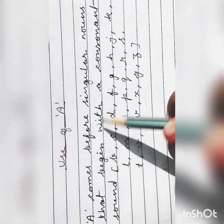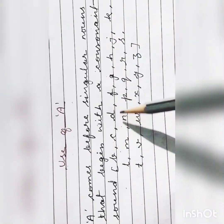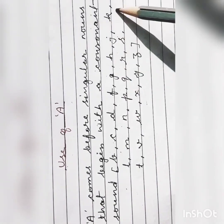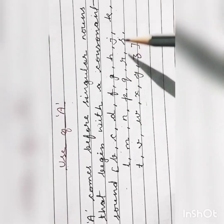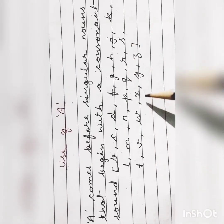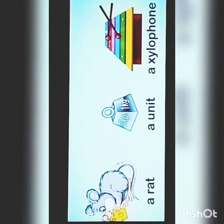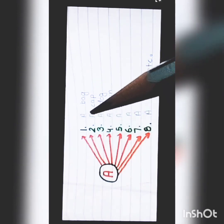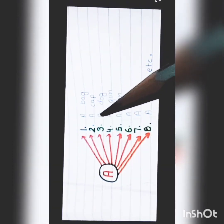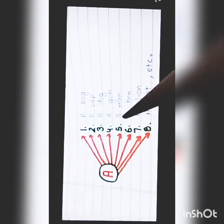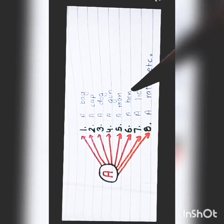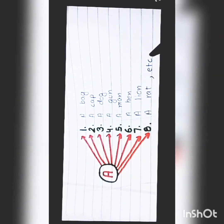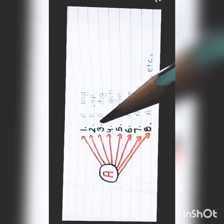A comes before singular nouns that begin with a consonant sound — that are b, c, d, f, g, j, k, l, m, n, p, q, r, s, t, v, w, x, y and z. For example: a rat, a unit, a xylophone, a bag, a cap, a dog, a gun, a man, a hen, a lion. Here we use the article a.